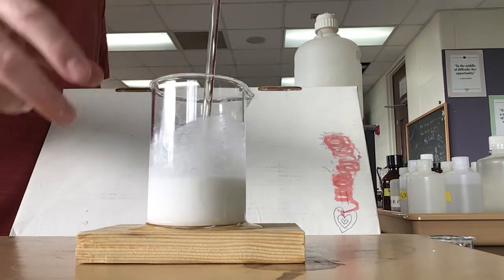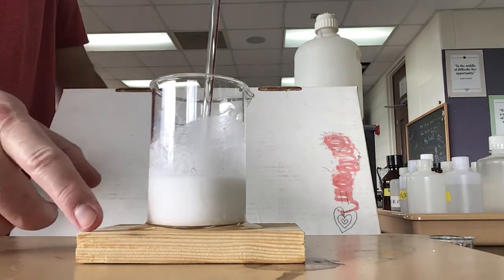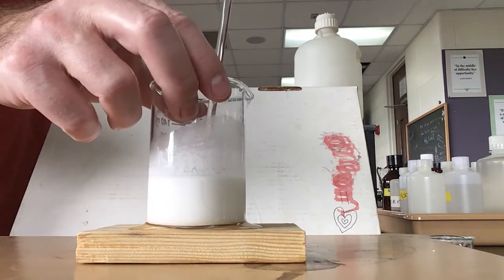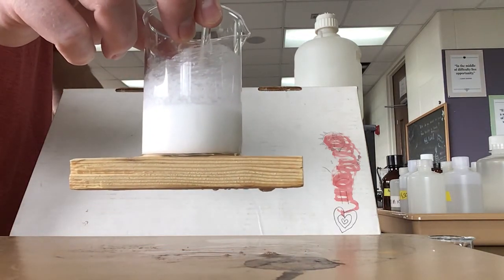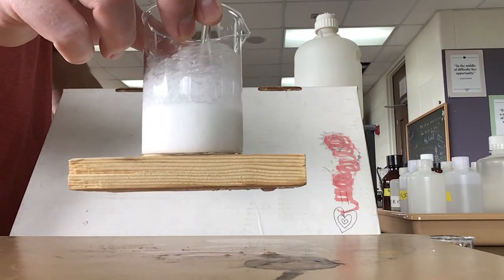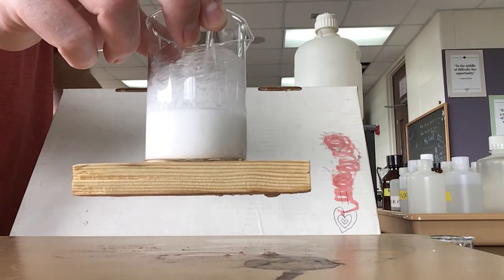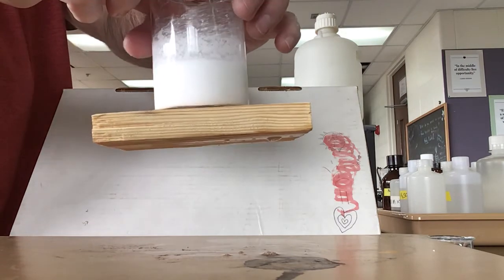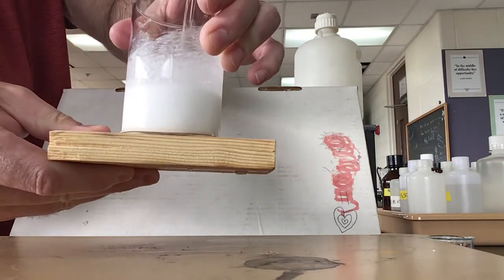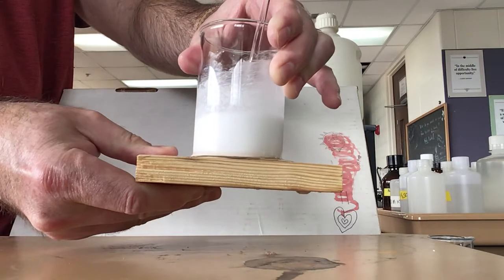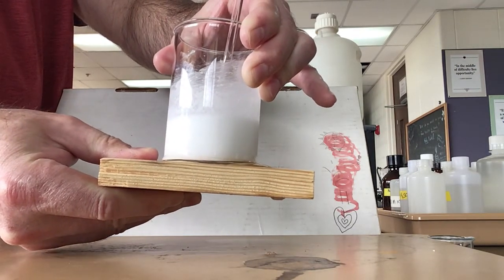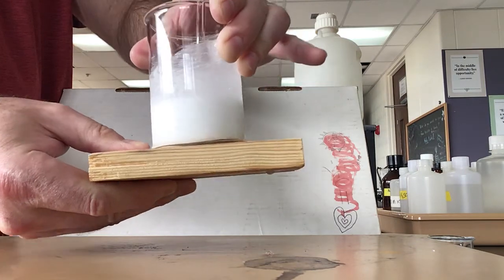What happened is that this beaker is now frozen to the block of wood. That's why we're able to pick this up. It's not just held together by some type of suction or anything like that. It's actually frozen to the block of wood. If I try to pull it apart - you can't quite tell, but I'm actually putting quite a bit of pressure here trying to pry this apart and it's just not happening.